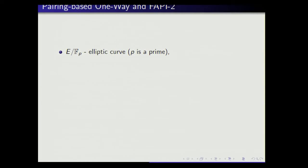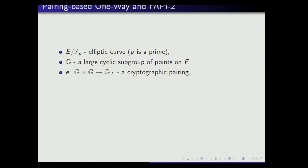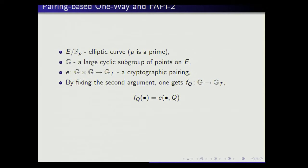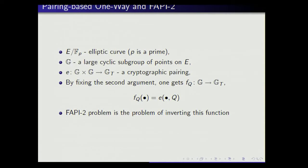To state the assumption: I fix a prime P and an elliptic curve over F_P, and then consider a large cyclic subgroup of points on the elliptic curve, G. I consider a cryptographic pairing from G cross G into a target group. If I fix one of the arguments of the pairing — the second argument — what one gets is a function from the group G to the target group. That function is what we believe is hard to invert, and we call the problem of inverting it the fixed argument pairing inversion 2 problem, FAPI2. If I fix the first argument instead, then I get the problem known as FAPI1.